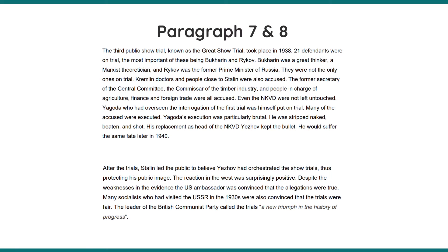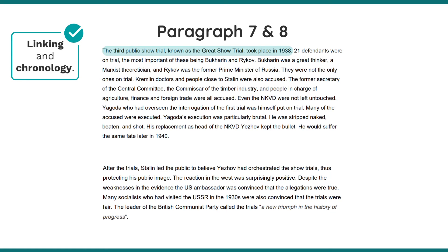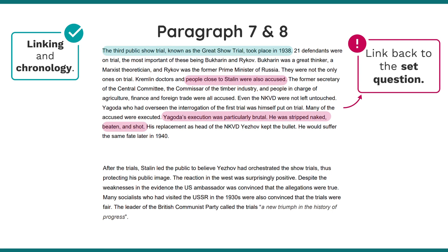Similar things can be said about paragraphs seven and eight further down the essay. When talking about the show trials, discussing the first, second, and third in order lends itself to seamless linking and ensures you're speaking in the correct chronological order, which I like. However, linking back to the set question would really hammer those paragraphs home. For example, on Yagoda's execution — 'He was stripped naked, beaten and shot' — you could add: 'This is a prime example of how Stalin was using terror and propaganda to ensure there was nobody to go against him and therefore he would remain in power.' Just hammer that home and make it a little bit clearer.